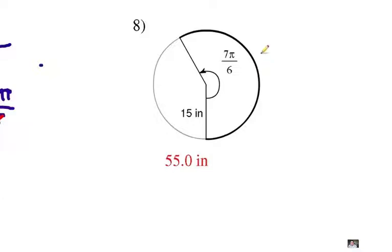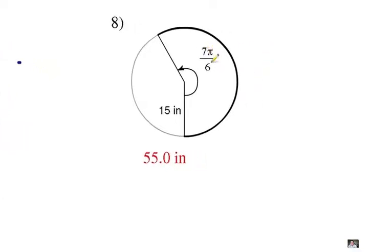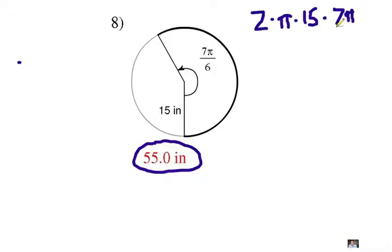Number 8, I hope that you tried it. Central angle is 7π/6. The radius is 15 inches. So we do get the answer 55.0 inches. Let's see where we get that. The circumference, 2 times π times the radius, which is 15. Times the central angle, 7π/6. All of that divided by 2π.